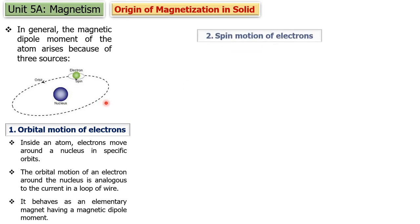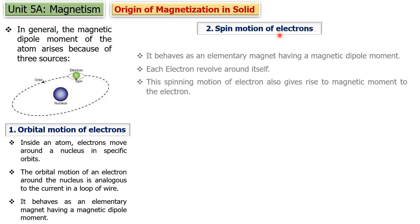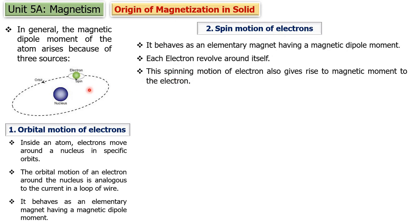The second reason is the spin motion of electrons. As an electron does orbital motion, it also does spin motion — it also revolves around itself. That is the spin motion of electrons. Because of this motion, it also contributes to the magnetic moment of an atom.